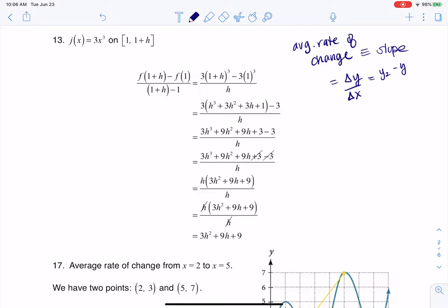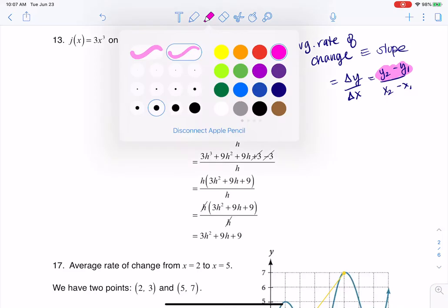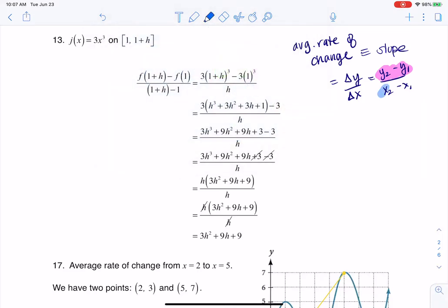And we remember that formula y2 minus y1 over x2 minus x1. So basically what we're doing is we're subtracting some y values and we're putting that in ratio to the subtraction of some x values.